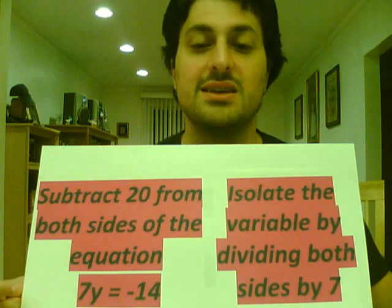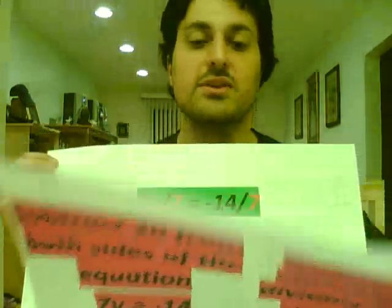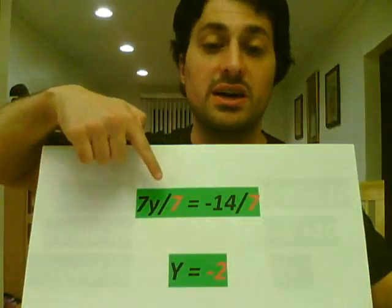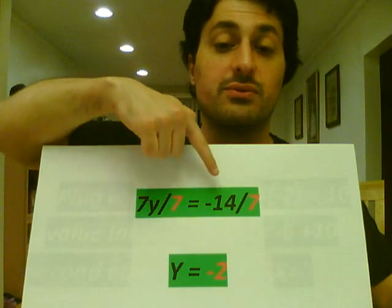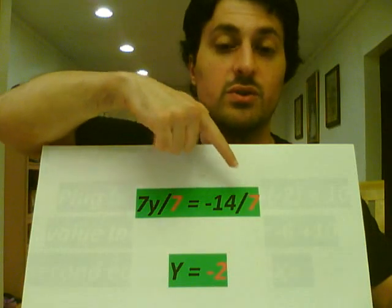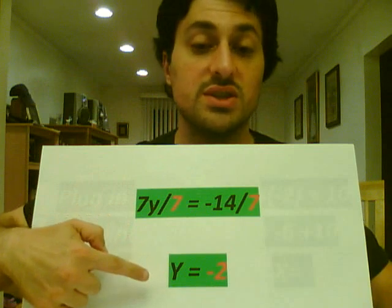Then we will isolate the variable by dividing both sides by 7. 7y divided by 7 equals negative 14 divided by 7, which will leave us with y equals negative 2.